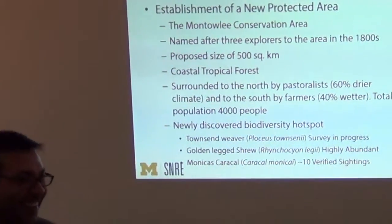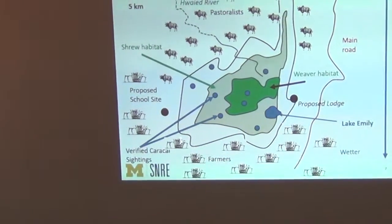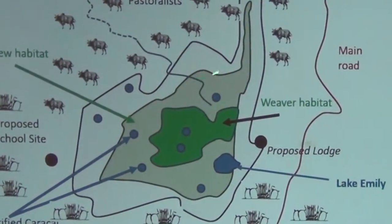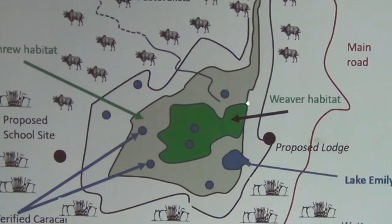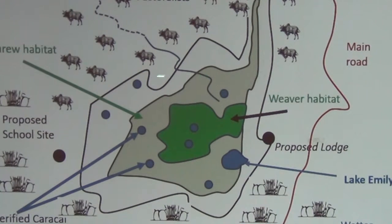The species names are all derived from some of our fearless leaders. Here's a map of the area. The black line is the proposed site of the protected area. The blue dots are sites where there have been verified caracal sightings. There's a little lake called Lake Emily, a core weaver habitat, and surrounding that the shrew habitat. It's surrounded by farmers and pastoralists, with a Waid River, and a scale bar of about 10 kilometers. There's a main road, and you can see the farmers to the south where it's wetter — a precipitation gradient — and the pastoralists to the north. There's a perennial river leading out of the conservation area, but it's been drying up quite a bit.